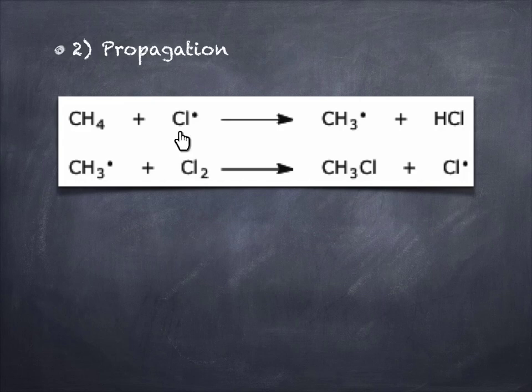This free radical is now highly unstable. It is looking to become stable by taking an electron, and so the chlorine free radical will attack the methane molecule, and in the process, the chlorine free radical actually becomes stable, becomes HCl.